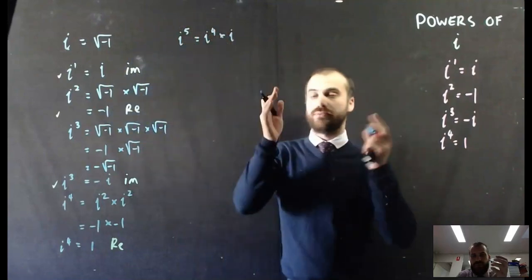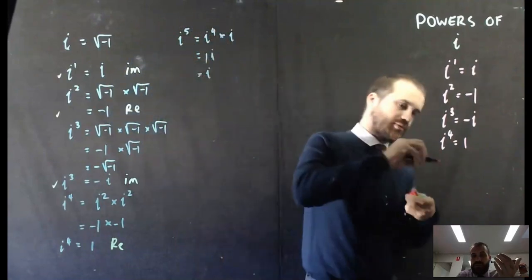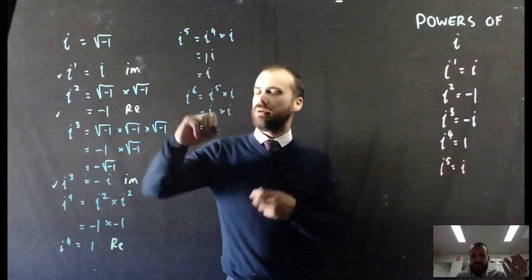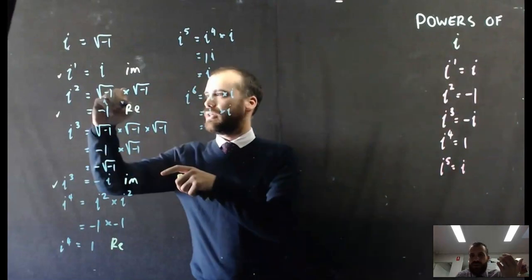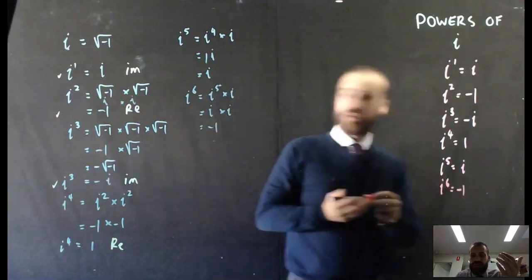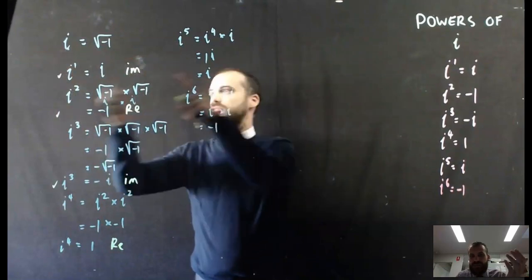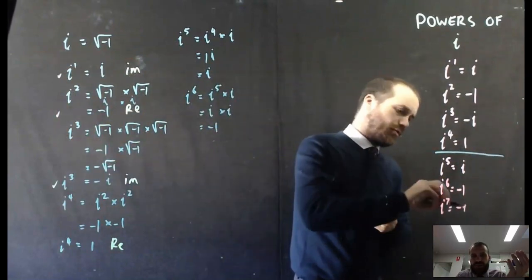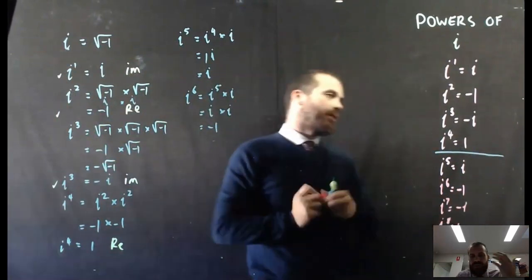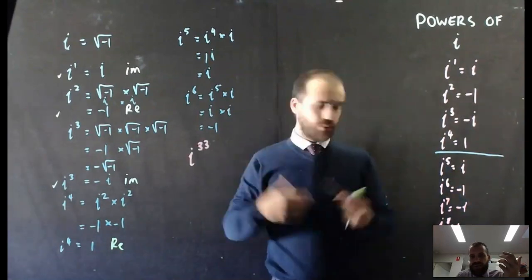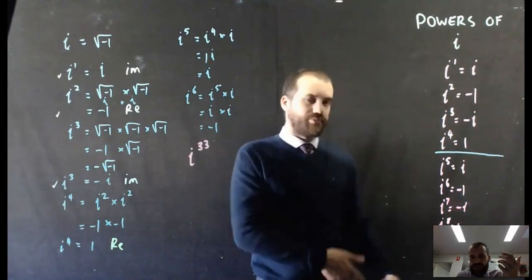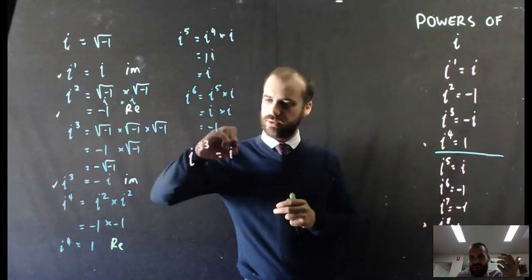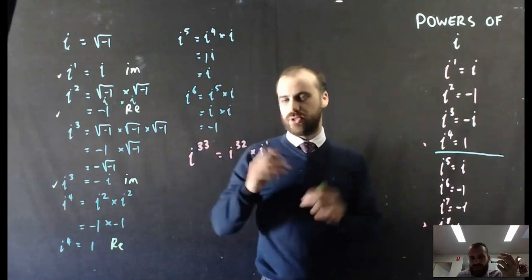If we look at i to the 5, that's the same as i to the 4 times i, which is just 1 times i. Same thing happens for i to the 6, which is i to the 5 times i. This loop is going to keep occurring: i, negative 1, negative i, 1, i...